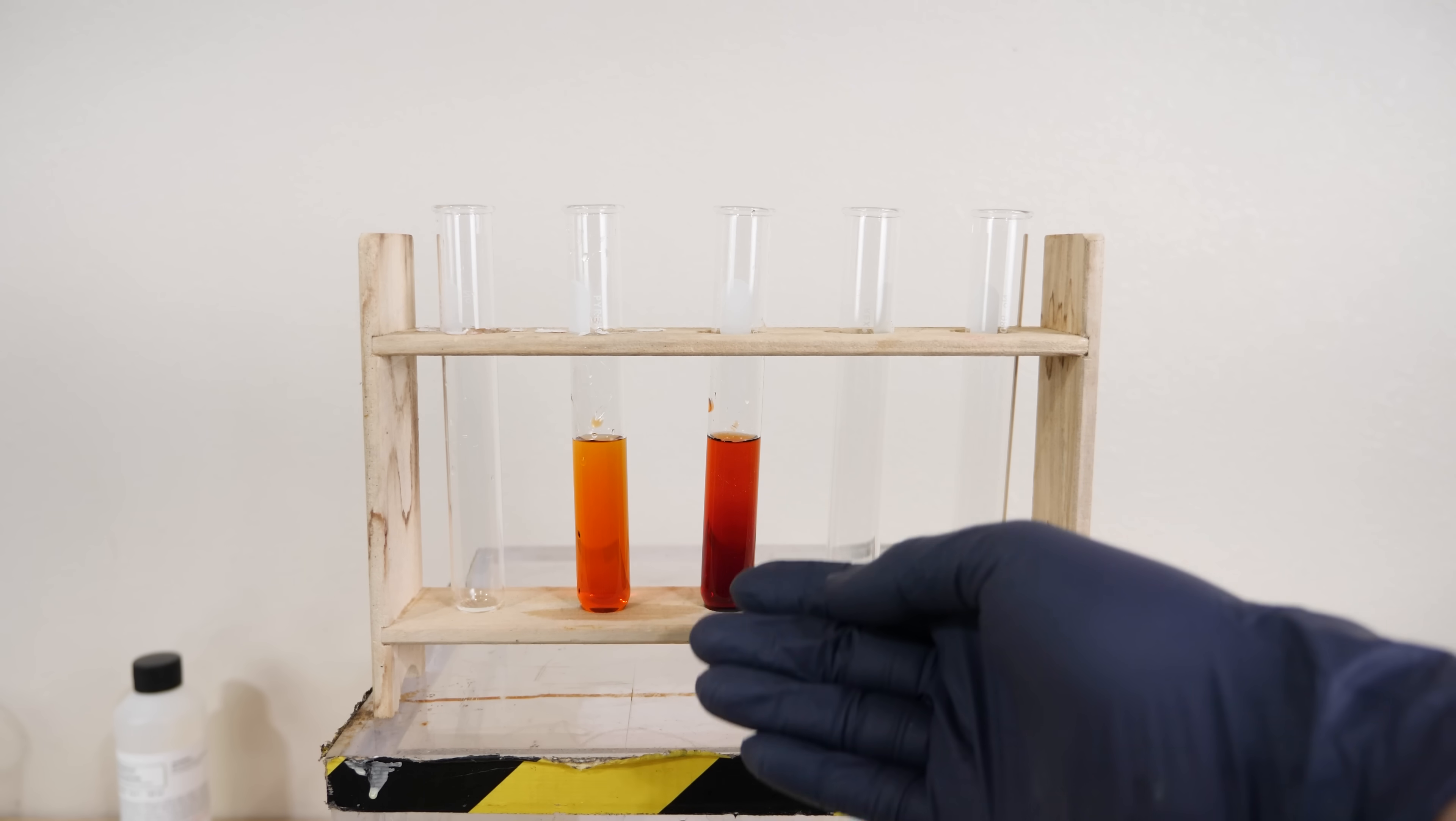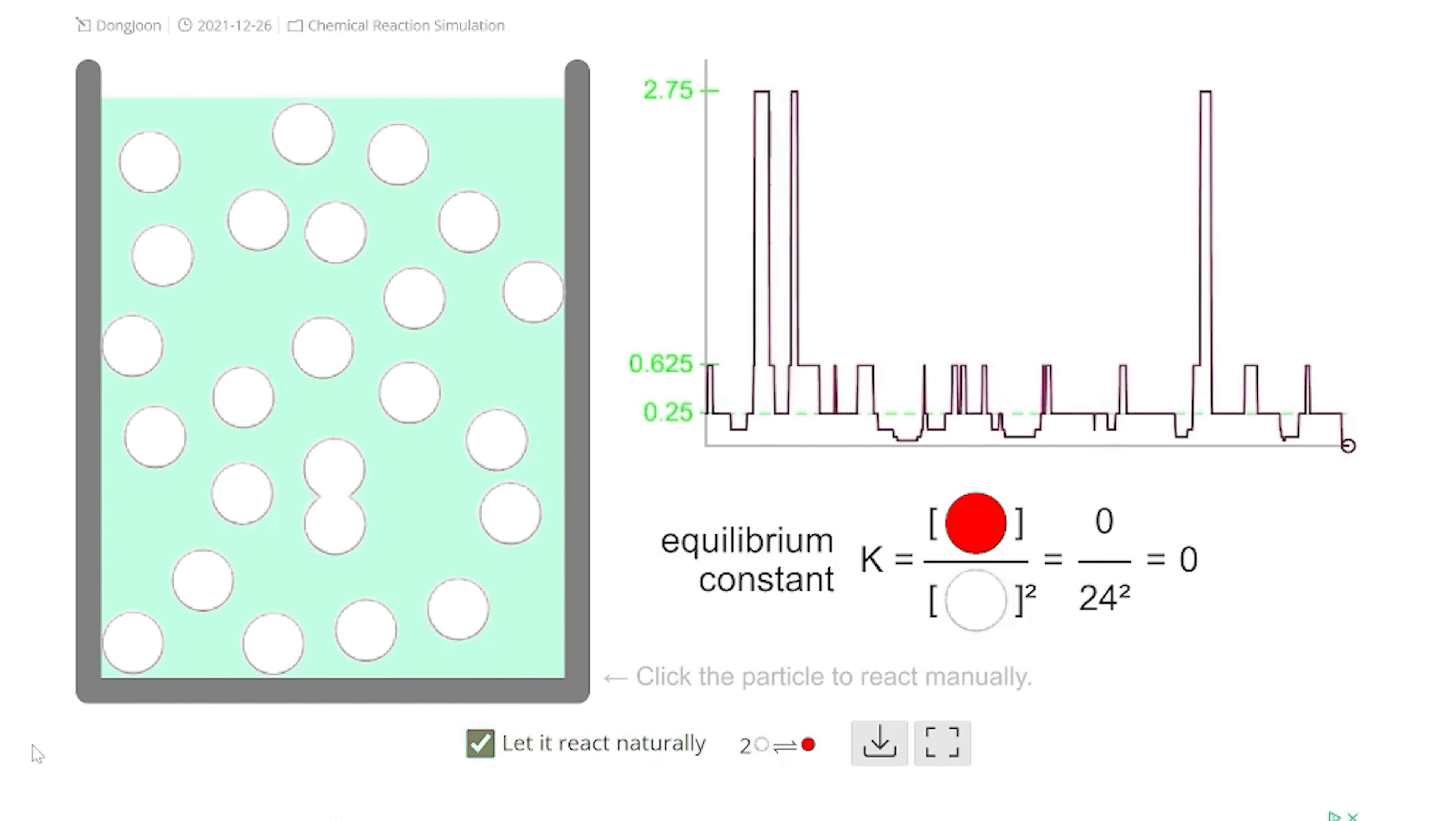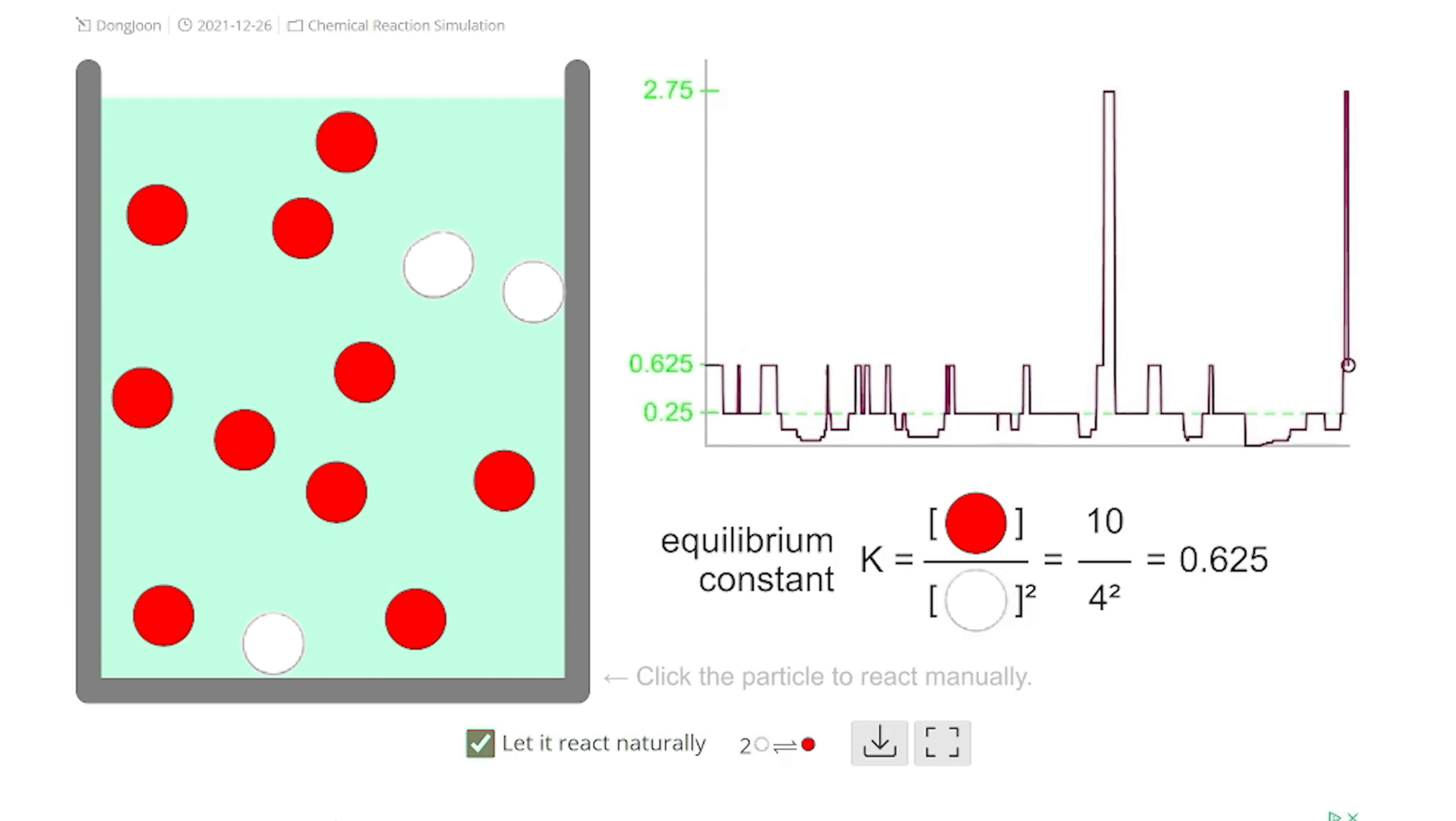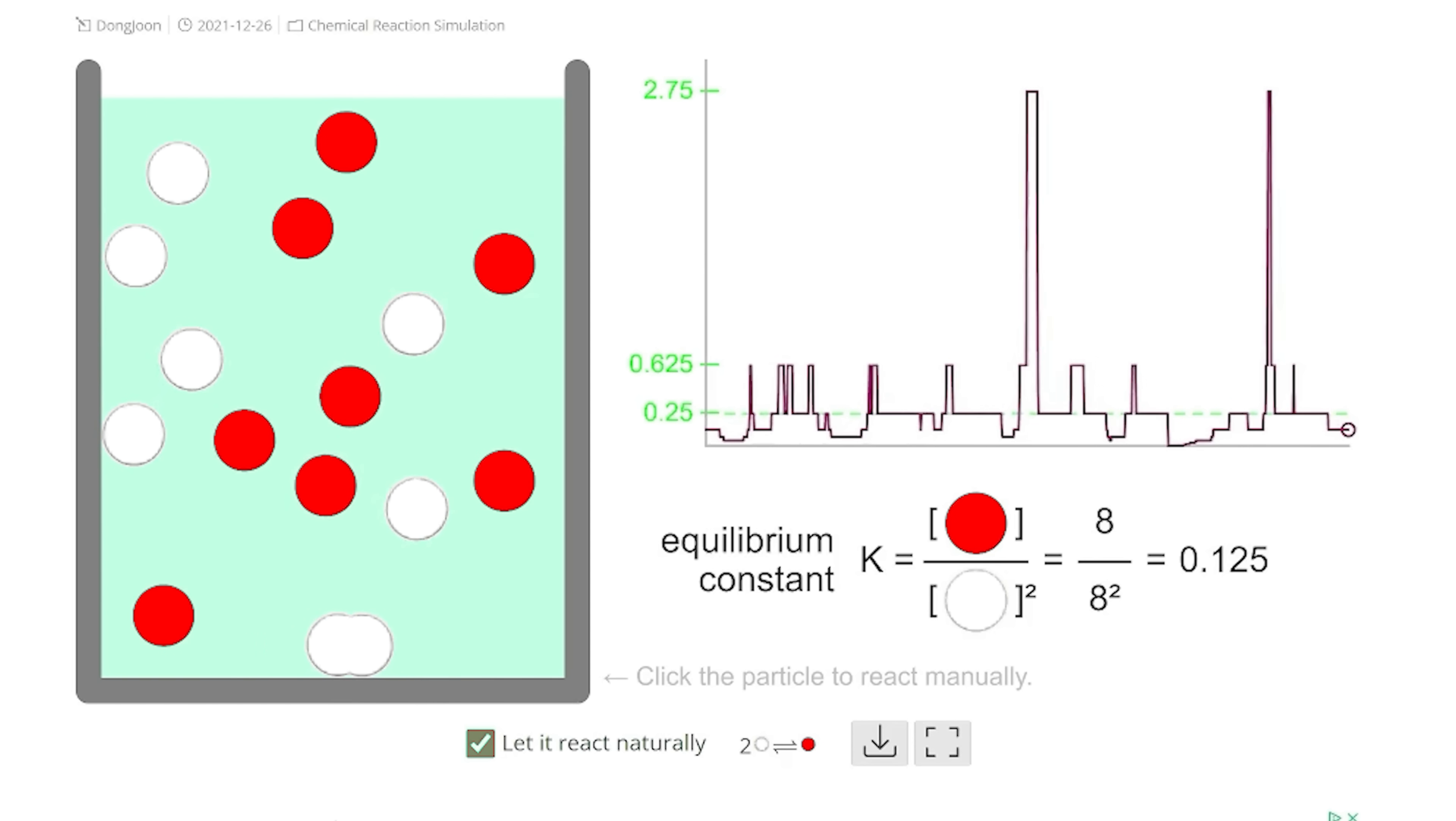Now what you just saw here is something called Le Chatelier's principle. For example, let's say we have a beaker of iron and thiocyanate mixed together, and each of these are represented by these white dots. So two white dots can combine together to form a red dot, and the red dot is iron thiocyanate. You can see that once the reaction starts, it doesn't just stay reacted, but the red dots are continually turning back into two white dots and two white dots are continually forming red dots.